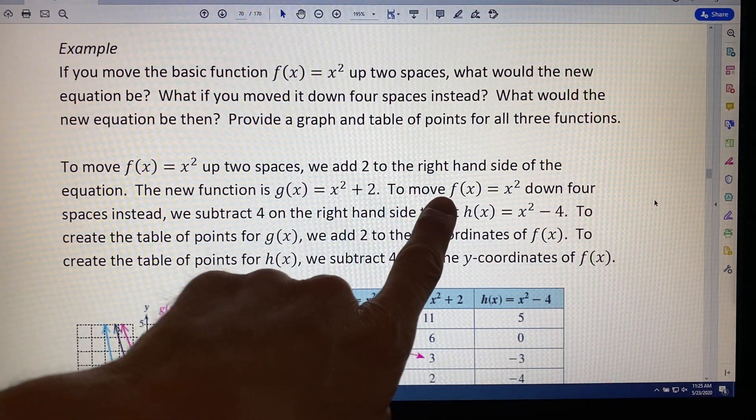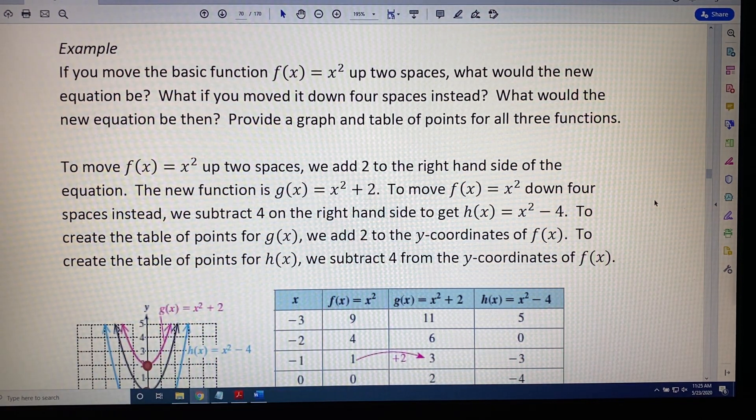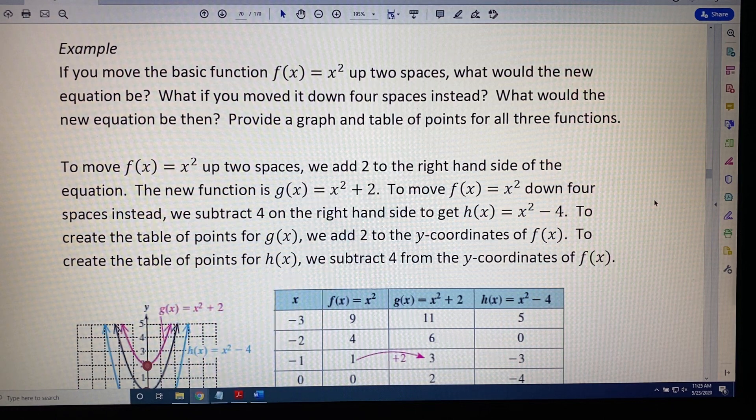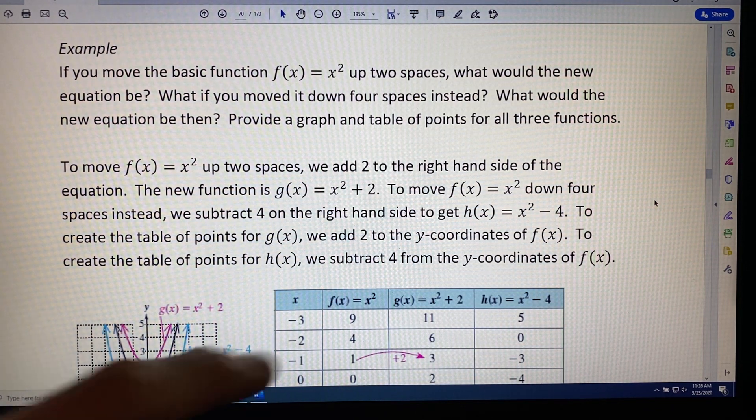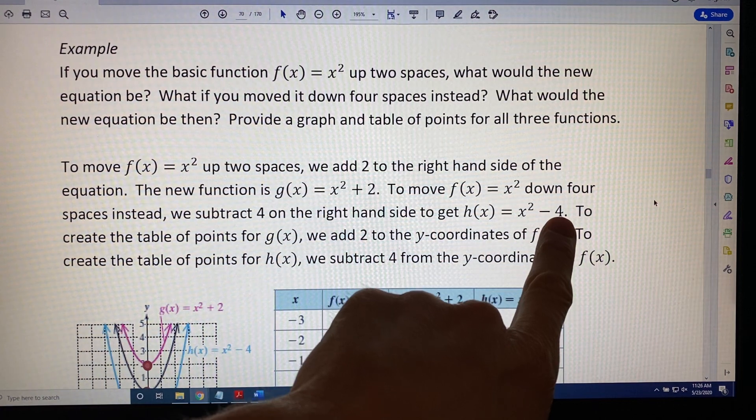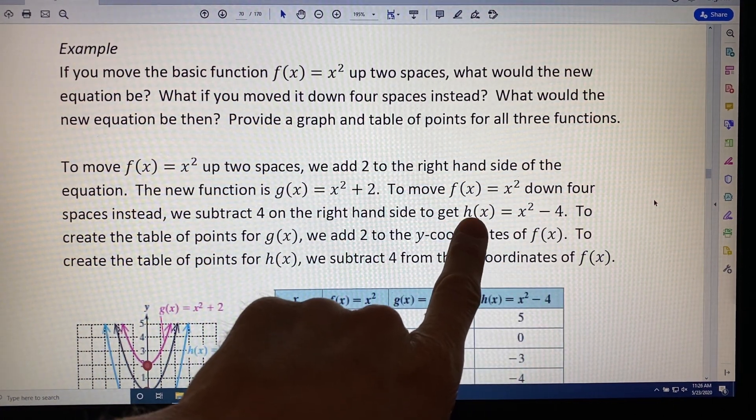What about taking f(x) = x² and moving it down four spaces instead? We would subtract 4 on the right-hand side, and we would get x² - 4. And again, new function, new name, we'll call it h(x).